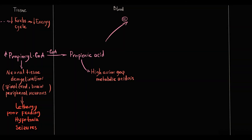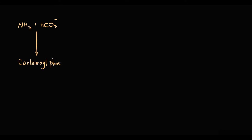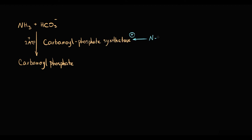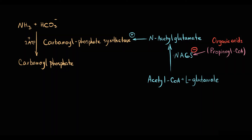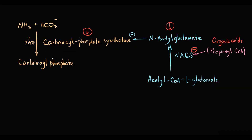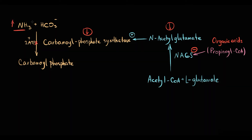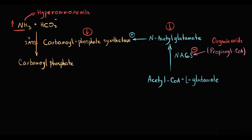Organic acids inhibit the urea cycle, causing hyperammonemia. The mechanism is that the first reaction in the urea cycle — where ammonia binds to bicarbonate to produce carbamoyl phosphate — is catalyzed by carbamoyl phosphate synthetase, whose activity is stimulated by N-acetylglutamate. N-acetylglutamate is produced from acetyl-CoA and L-glutamate by N-acetylglutamate synthase. Organic acids such as propionyl-CoA inhibit N-acetylglutamate synthase, decreasing N-acetylglutamate levels, so ammonia cannot enter the urea cycle, causing massive ammonia accumulation in the blood.